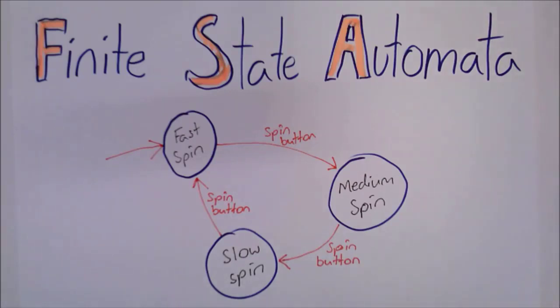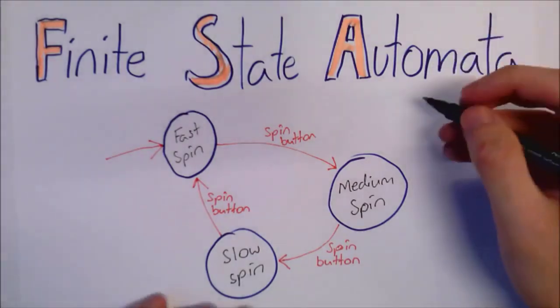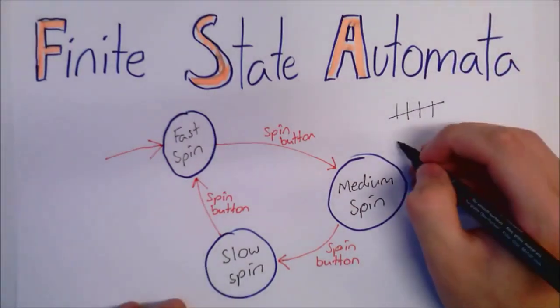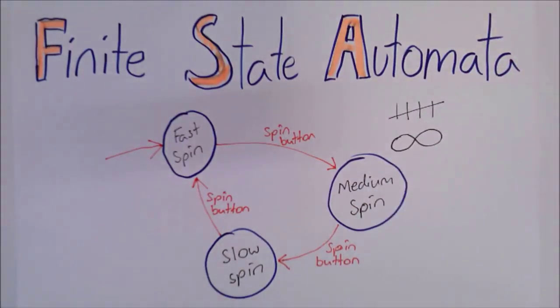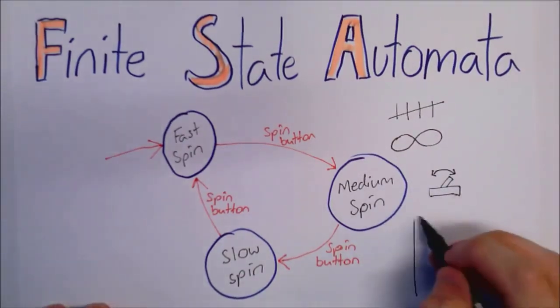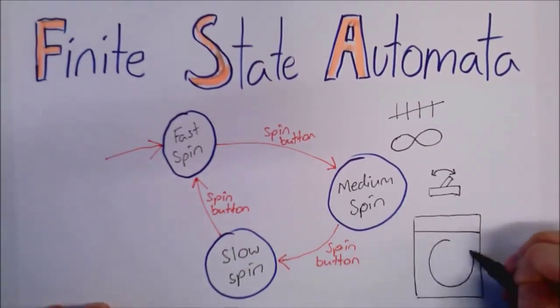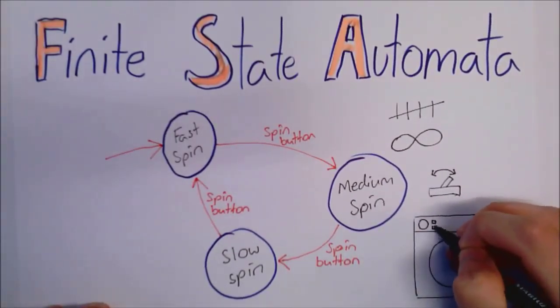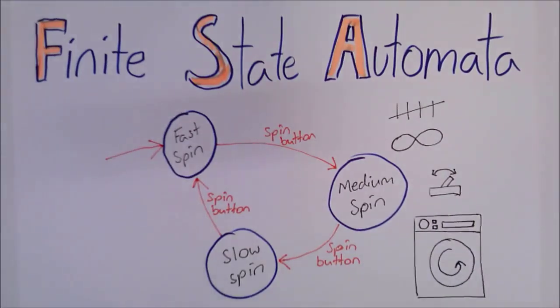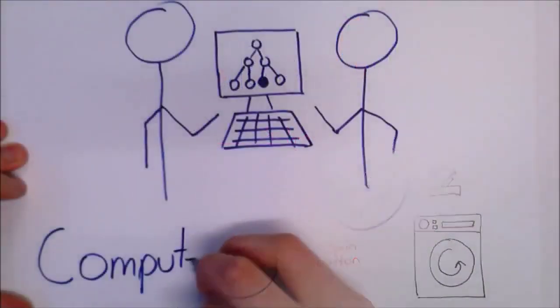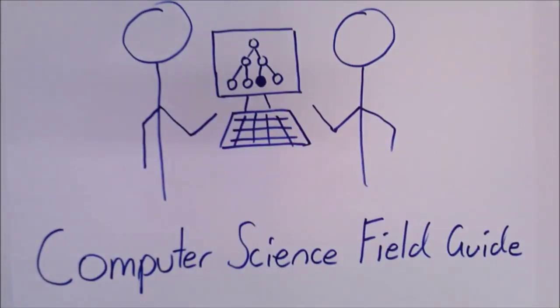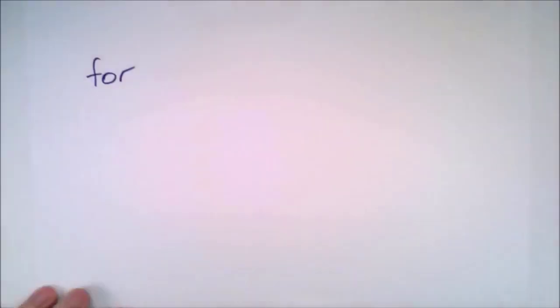So, what do these words mean, Finite State Automata? Finite means there are a limited number, as opposed to infinite, which means the number is unlimited. A state is a condition at a particular time, and Automata is the plural for Automaton, a machine that functions on its own, following some simple instructions and rules. Therefore, a Finite State Automaton is a simple machine with a finite number of states.